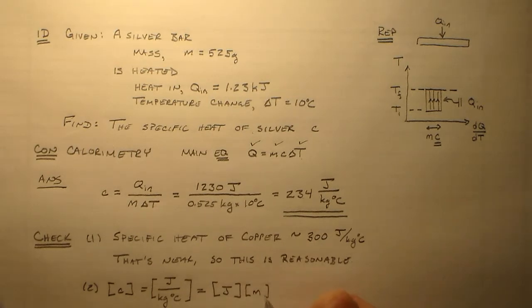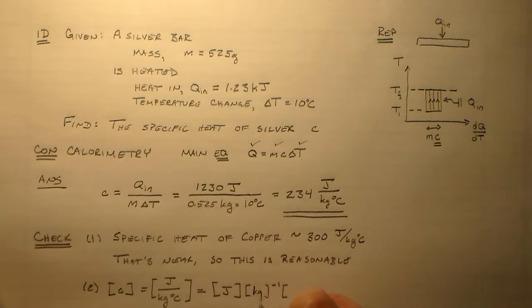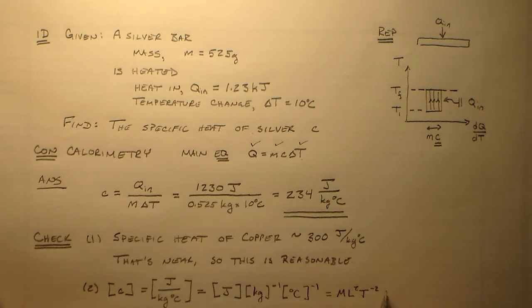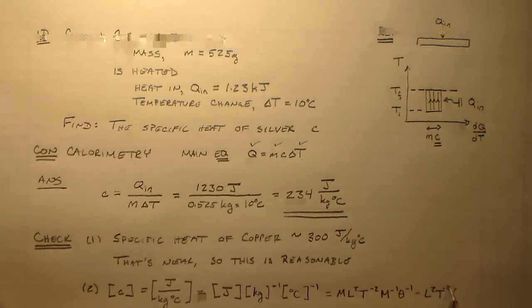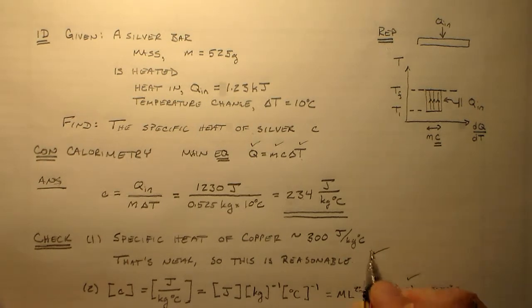We can go all the way through to the dimensions if you'd like. So units of J, units of M to the minus 1, excuse me, kilograms, and degree C to the minus 1. Which is equal to M L squared T to the minus 2. What else do we have here for fun? M to the minus 1 and theta to the minus 1. Which is L squared T to the minus 2 theta. And those are the correct dimensions for the specific heat. So we've got two checks there. They're both perfectly fine.